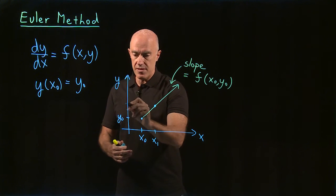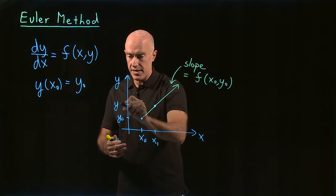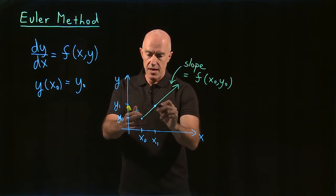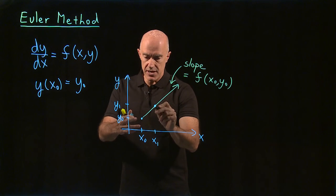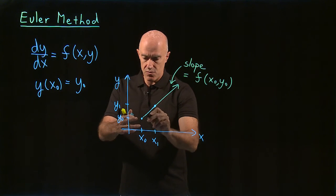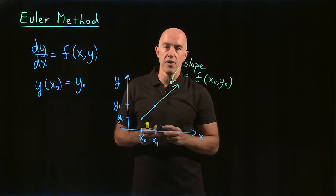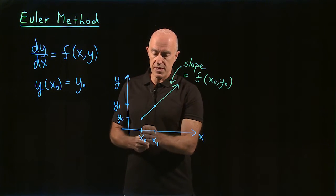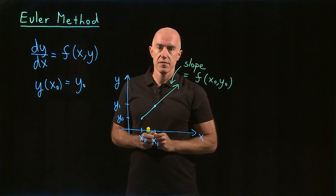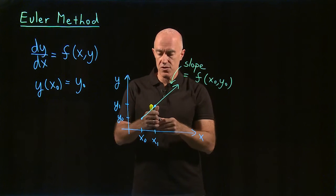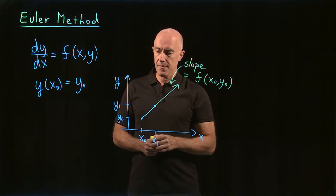And that will be the new y value, y1. And this line segment here will be the approximation to our function between x naught and x1. That's what the numerical method does.